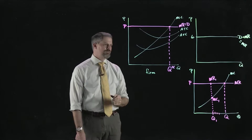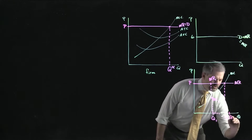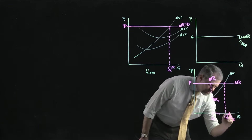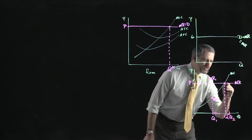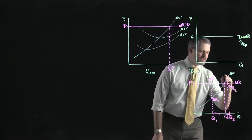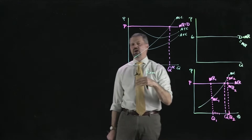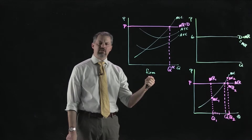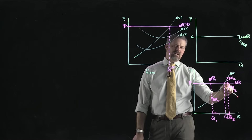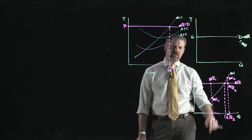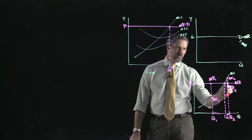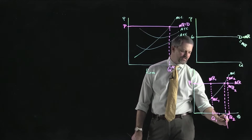For a quantity Q2 to the right of Q*, marginal revenue is below marginal cost — that doesn't pass the test. We get less in revenue at the margin than the cost we incur at the margin. So we don't want to produce any quantity to the left of Q*, and we don't want any quantity to the right of Q*. That just leaves Q* as the right quantity to produce.